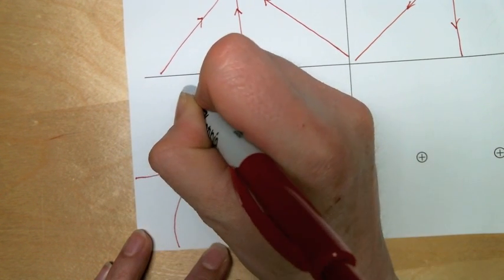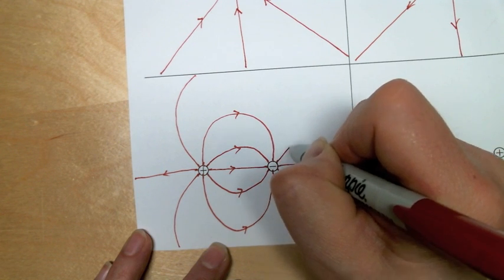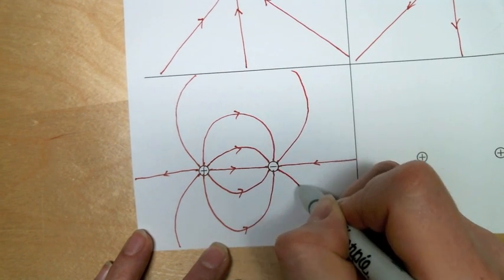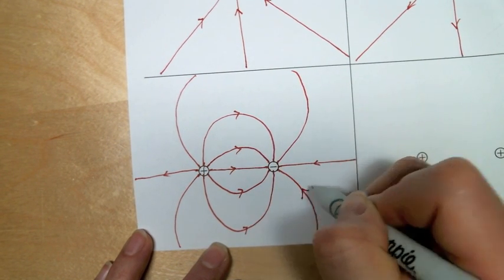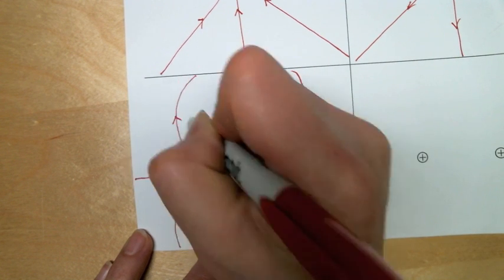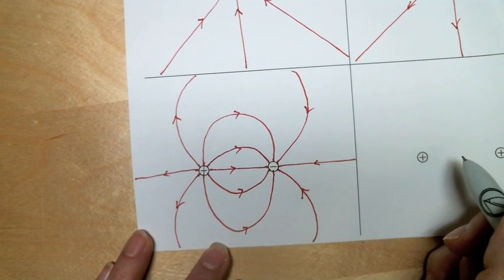Here, where our curve is going to get pretty large, so we might not actually have our curves meet. But once again, after we've done the curves, we're going to fill in with the arrows going towards the negative and away from the positive.